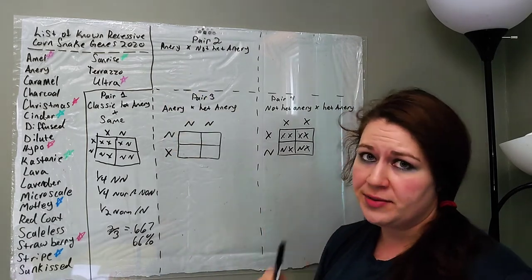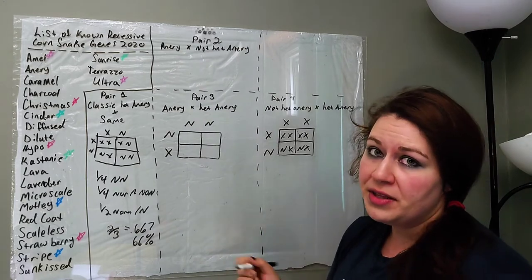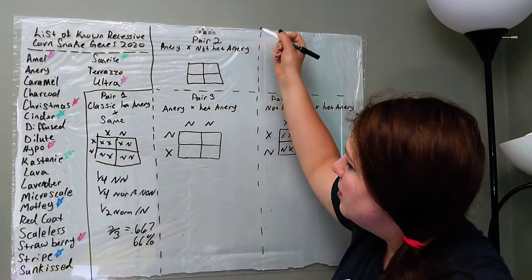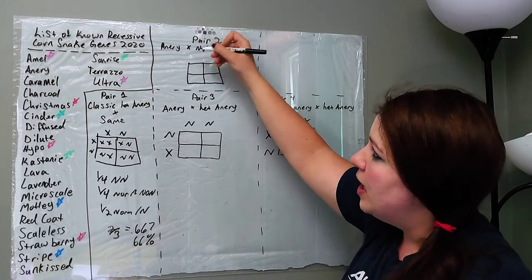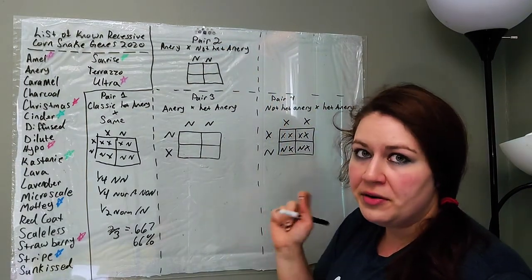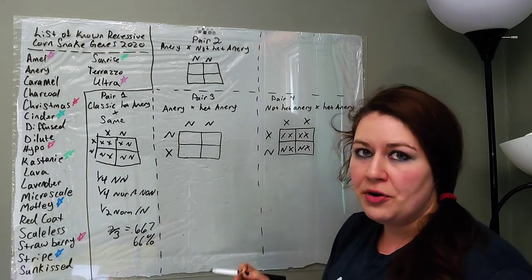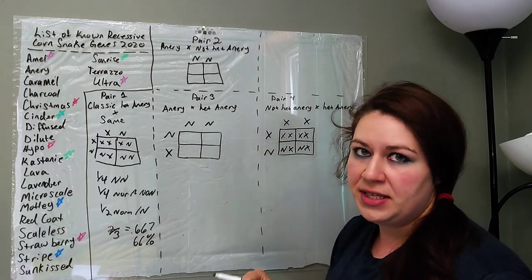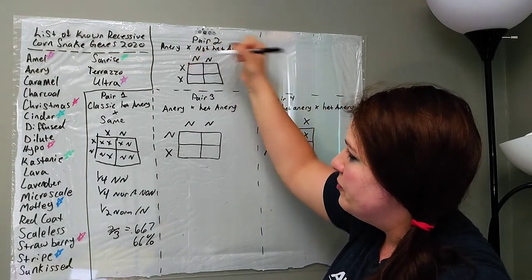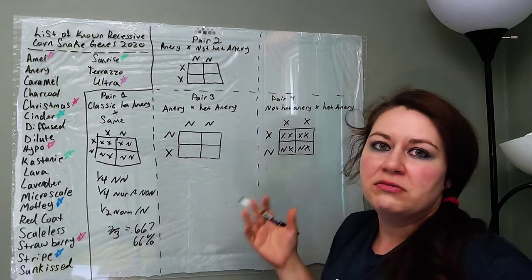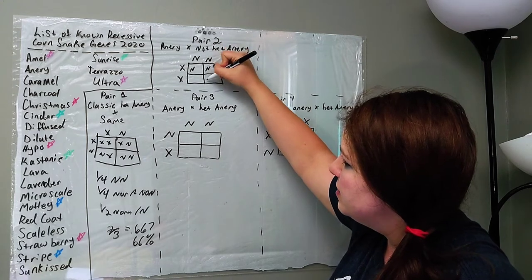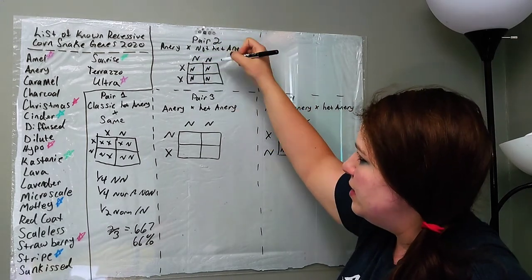I'm going to go ahead and move up to pair two, and we'll make a Punnett square for that. We have an anery to a not het anery, or, in this case, we'll just call it a normal not het anery. So, I'll go ahead and make a square. And, I'm going to go ahead and plug in, since we have anery as the first parent, anery visual is going to have the anery gene on both sides. Again, because it's a recessive gene, in order for it to show, it has to be on both sides. So, if you have a visual anery, you know for sure, for a fact, that both sides of that snake's DNA have the anery gene on it. You don't have to question it. When you have a not het anery, we're just going to say a normal not het anery, that's just going to mean there's no anery gene.